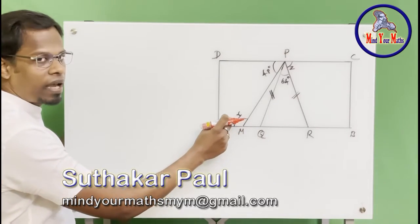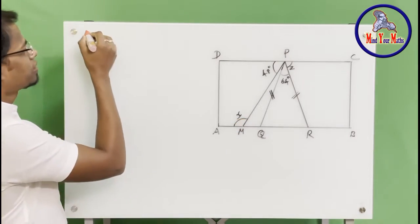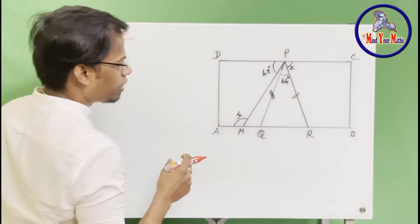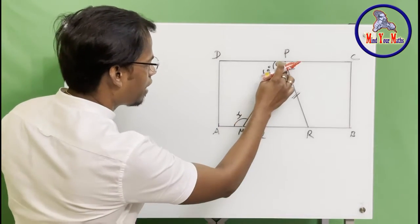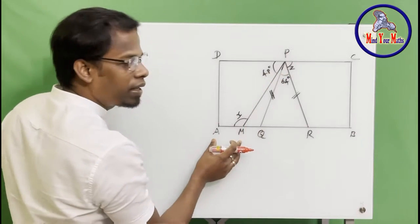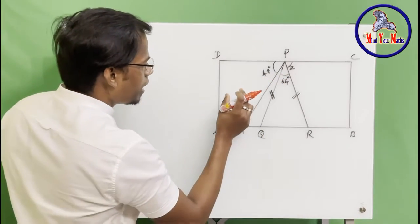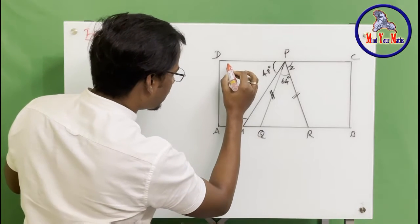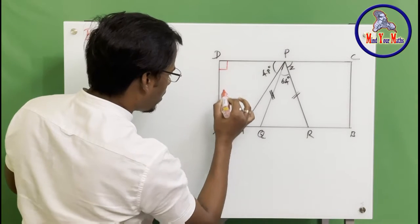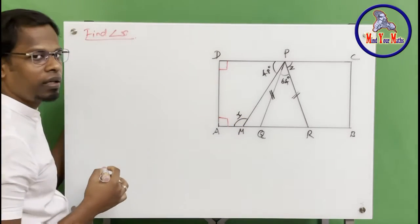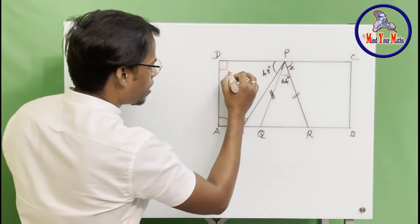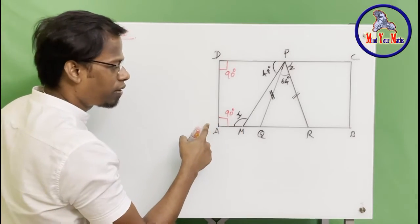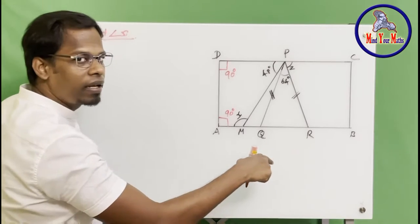Let's start with finding angle x. For that, we will take this trapezoid — a trapezium, however your teacher taught you. We know that these two angles right here are right angles, 90 degrees each, because these two are corners of the rectangle.